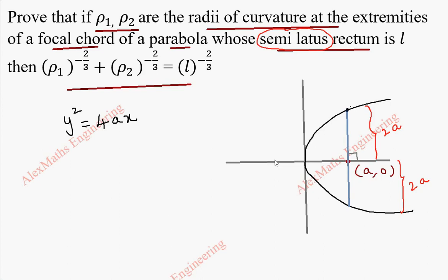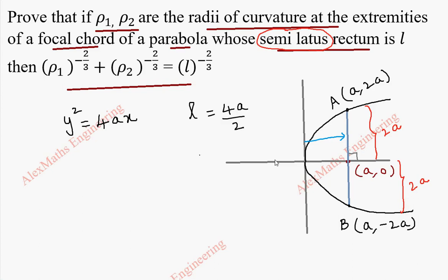This coordinate, let us take it as (a, 2a), because the horizontal distance is a and the vertical length is 2a. In the same way, we have another end point which is (a, -2a), negative because it is below the x-axis. The semi-latus rectum is L, so the total latus rectum is 4a, and taking half gives L = 2a in this case.